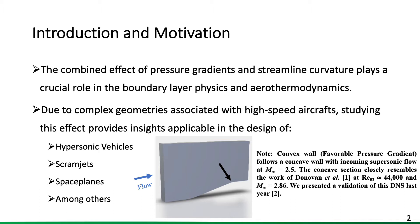The flow conditions are at Mach 2.5, and the inlet and concave regions closely resemble that of the work by Donovan and others, which were conducted at Reynolds number of 44,000 and an incoming Mach freestream number of 2.86. A validation of the present DNS was conducted last year at the Division of Fluid Dynamics meeting at Seattle.